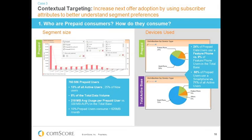The third case study is on targeting offers at particular subscriber bases based on their preferences and attributes. Because we can understand all subscribers, their preferences, attributes, and usage, we can segment the base in a way we want to target directly. In this instance, we're interested in switching prepaid consumers to a more lucrative postpaid plan. First, we need to understand the opportunity within the prepaid subscriber base and whether there's a segment likely to respond to a postpaid offer.